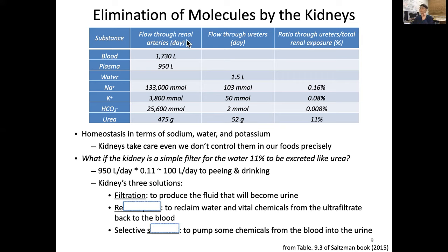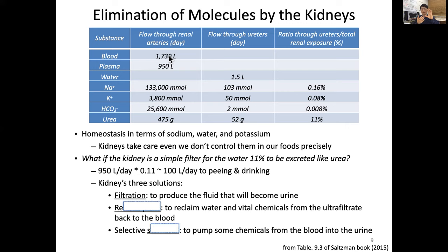The flow through the renal artery per day is almost 1,730 liters, which is an enormous amount of blood. We know that if you centrifuge blood, about 40% is cells — most of them are red blood cells — and the remaining 60% is the fluid component of the blood, which we call plasma, or blood plasma. So if you multiply by about 60%, you get about 950 liters.